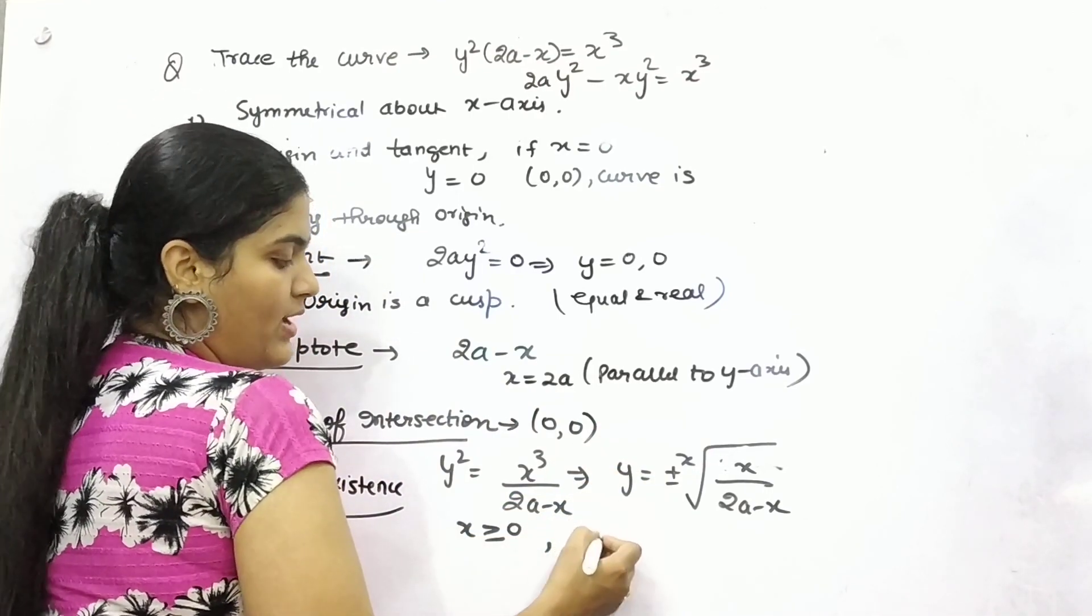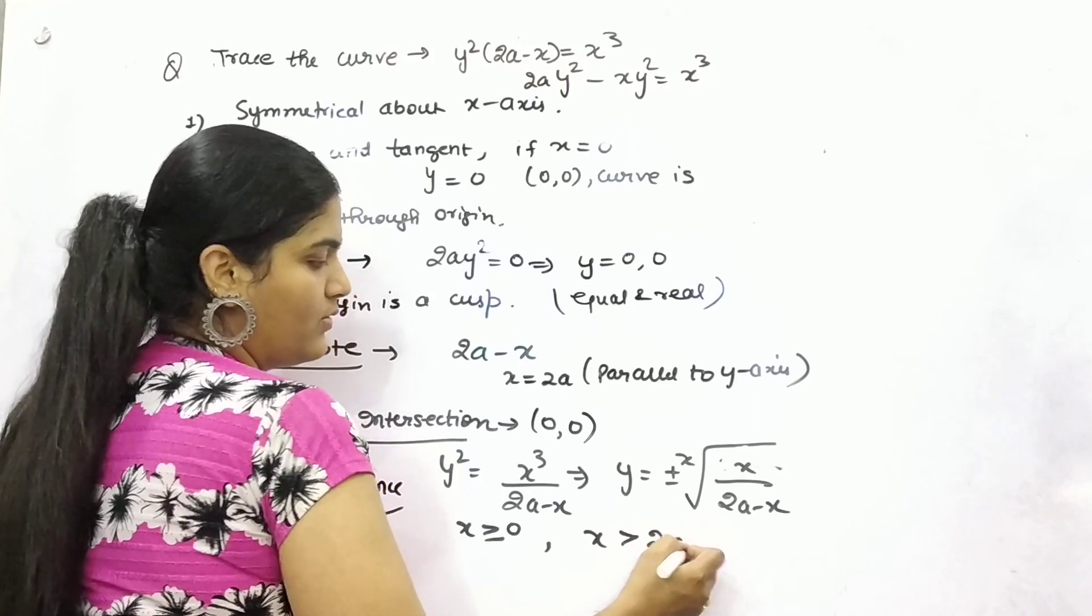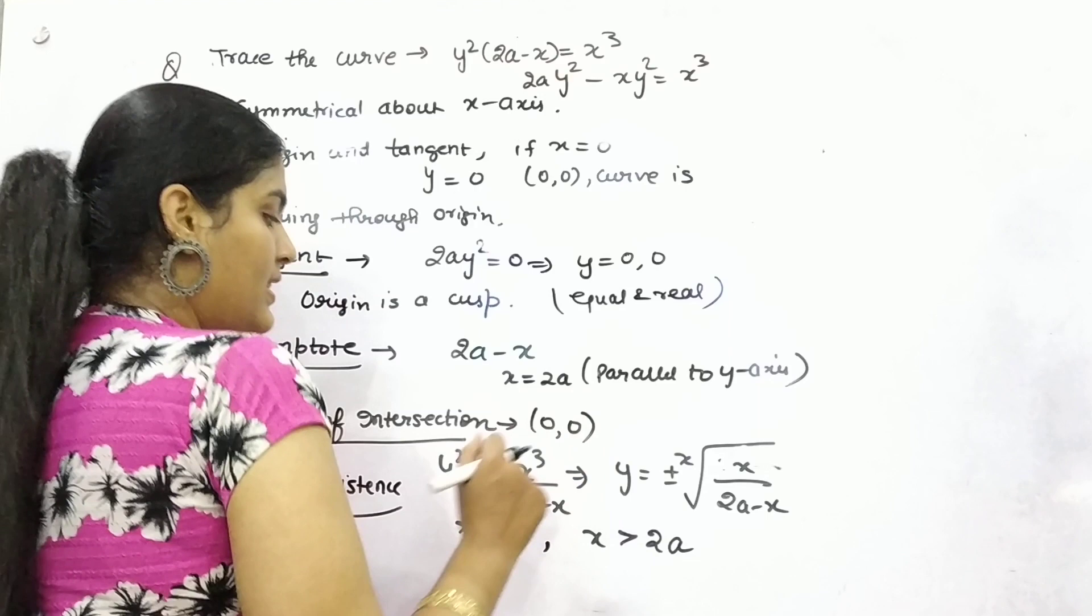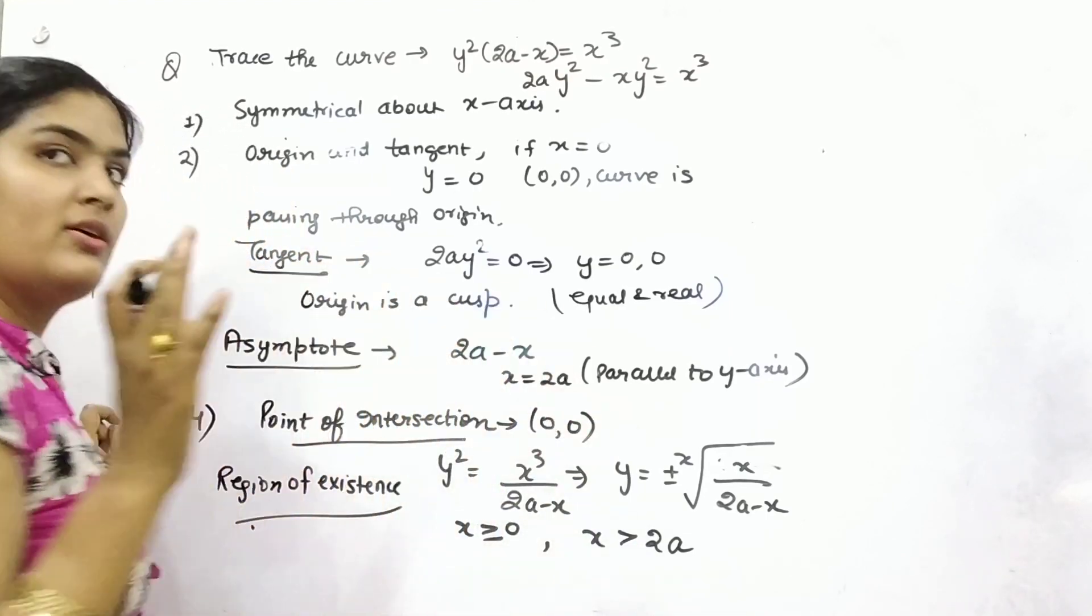which will make it again imaginary number. So for that, your x should be less than 2a. Let's make the curve.